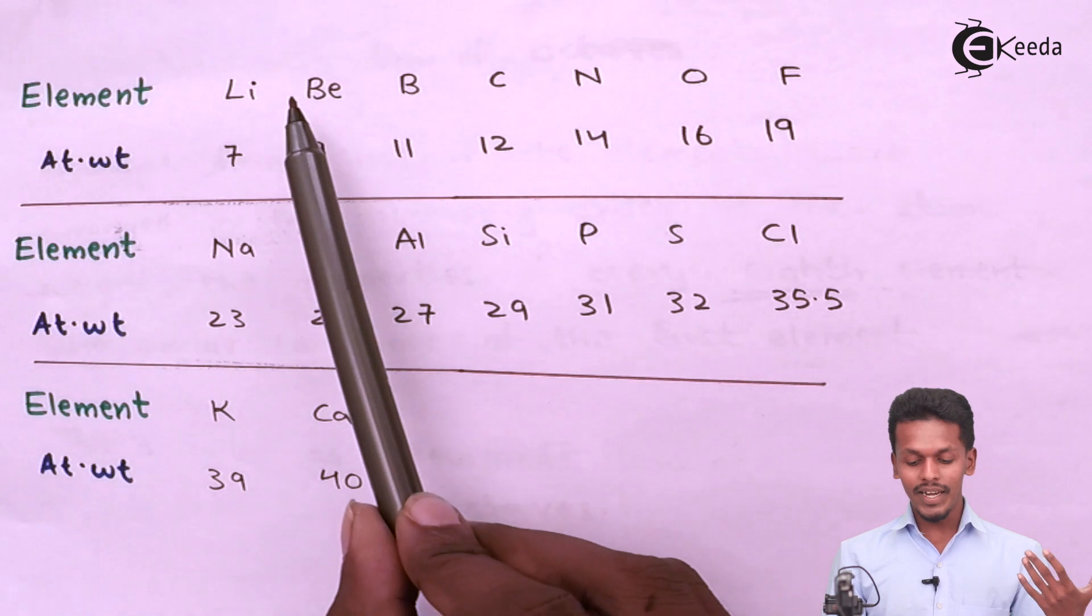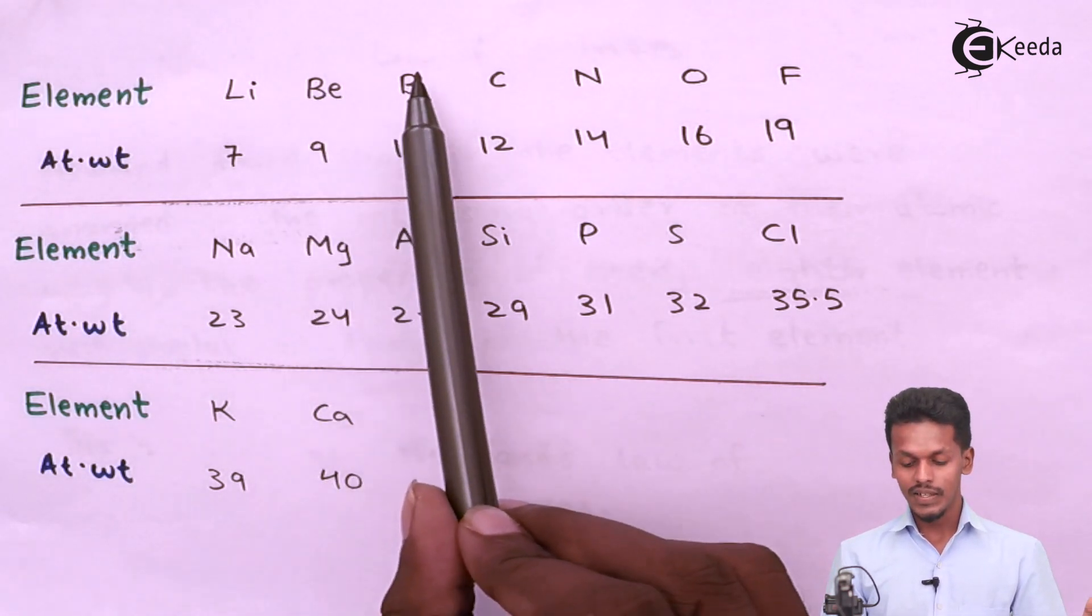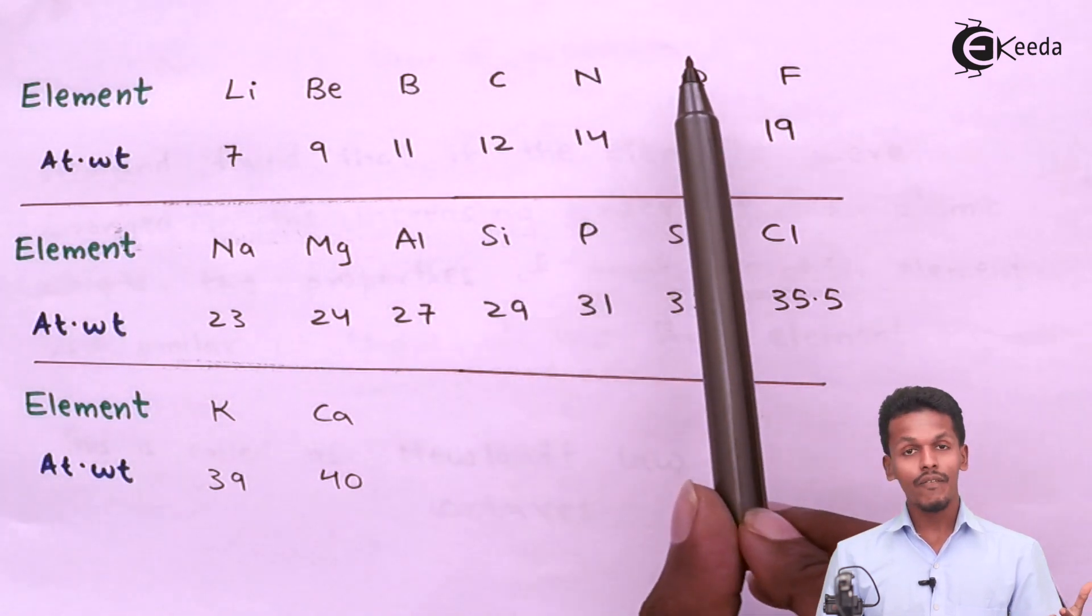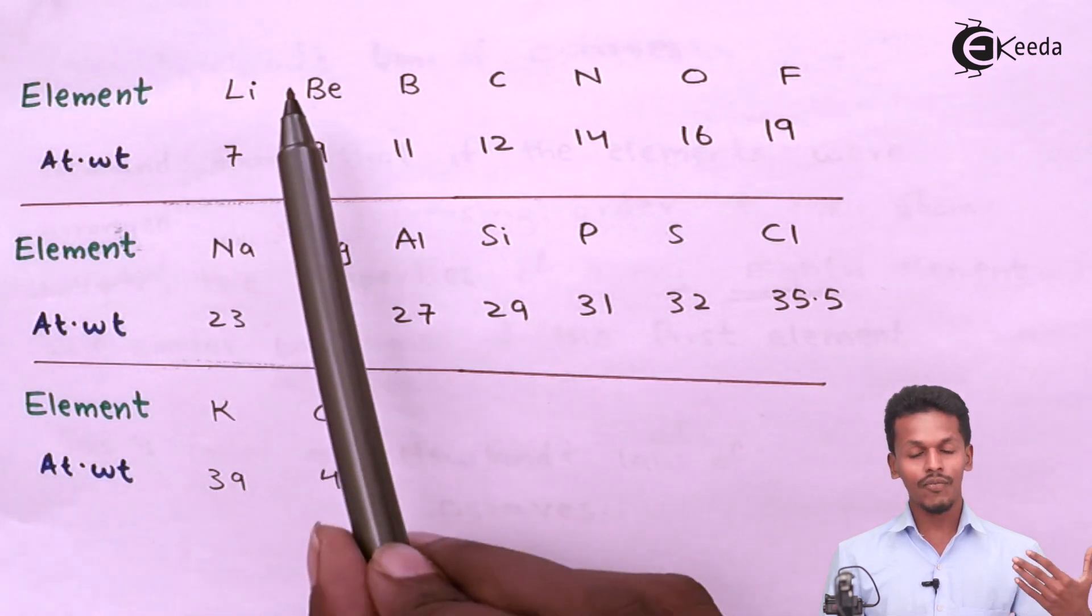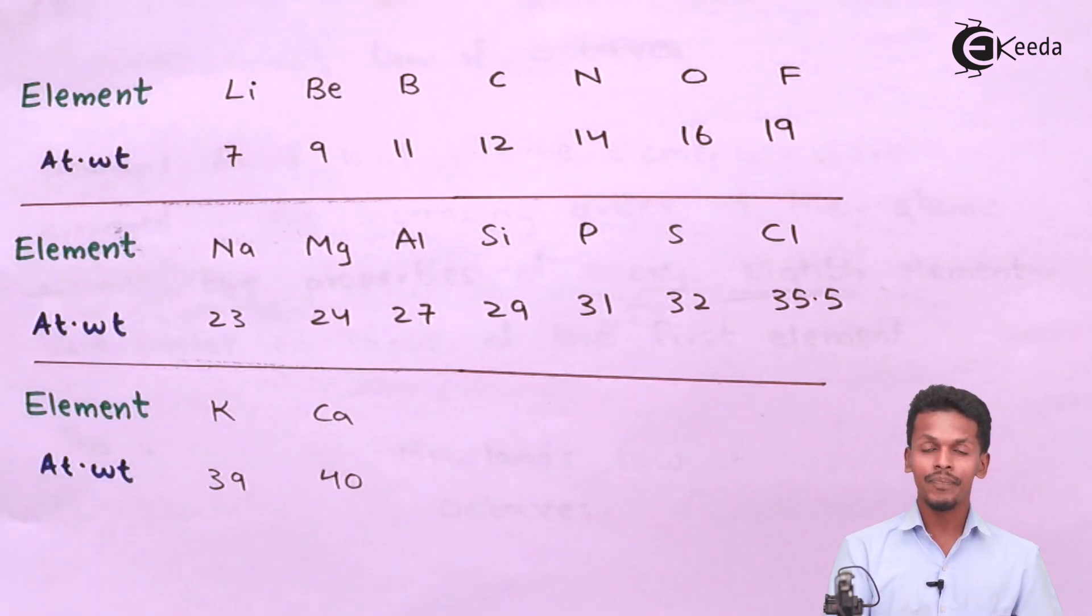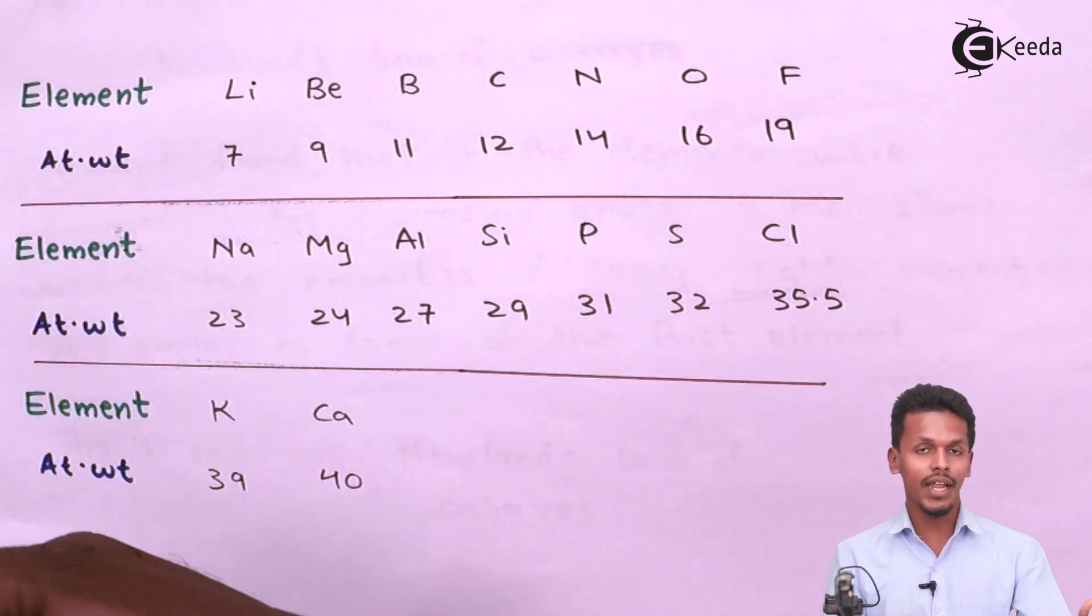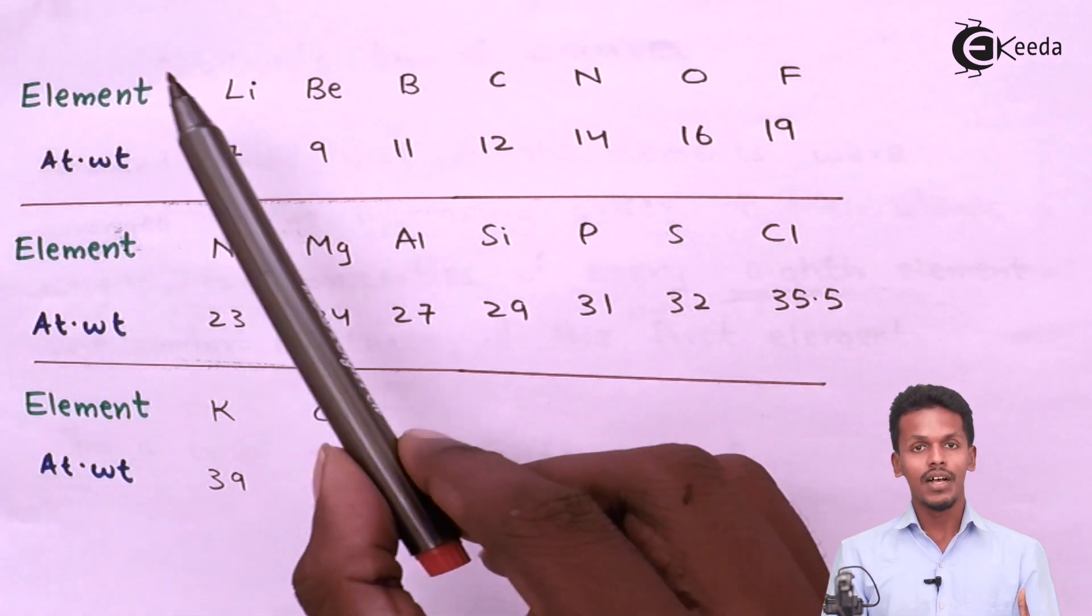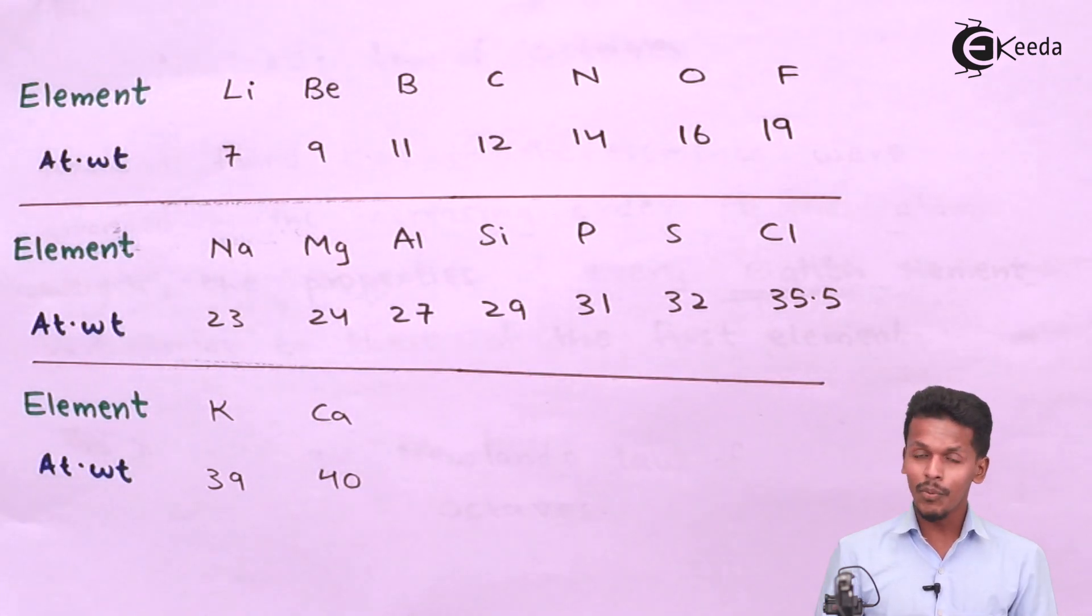Talking about beryllium, if we consider beryllium as the first element, counting one, two, three, four, five, six, seven, magnesium would be the eighth. Beryllium and magnesium are the first and eighth elements when we increase the atomic number according to Newland's octave, and hence they have similar properties.